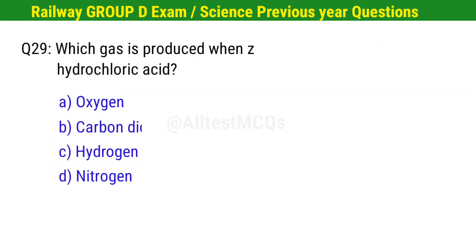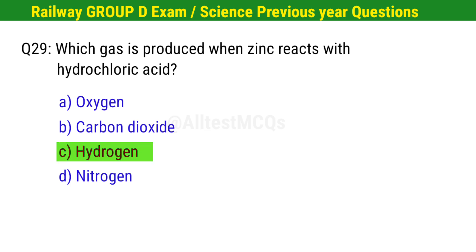Question No. 29. Which gas is produced when zinc reacts with hydrochloric acid? Right option is C. Hydrogen.